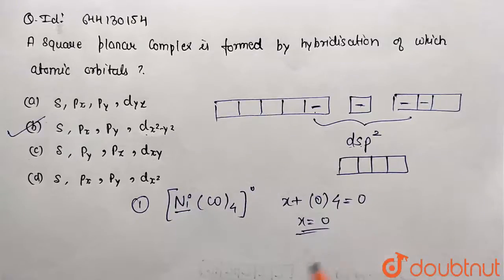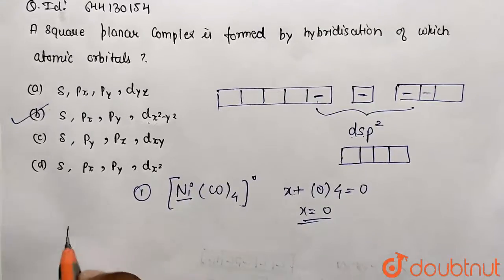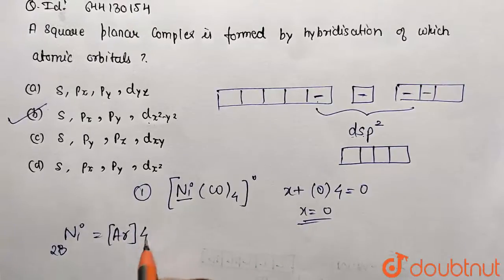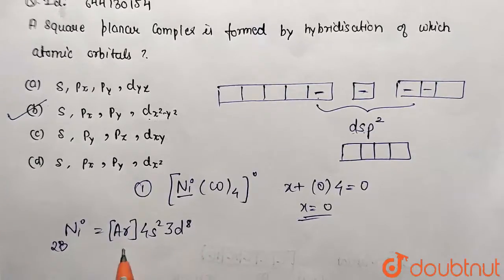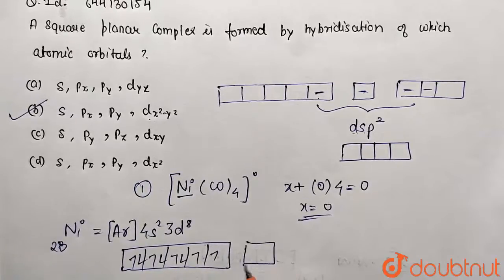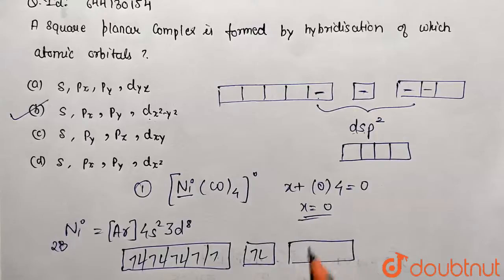This states that nickel is present in ground state only, and configuration for ground state is already known to you because it has 28 atomic number. So this is [Ar] 4s² 3d⁸. This will be its electronic configuration if I represent in the diagram: this is 3d orbital with eight electrons, this 4s², and 4p is already vacant.